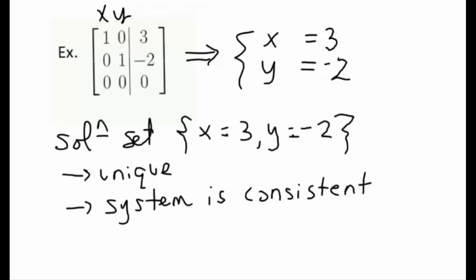We can write down the solution set: x equals three, y equals negative two. We call this a unique solution because each variable has only one value associated with it. Furthermore, we label our original linear system as consistent, because we have a solution.